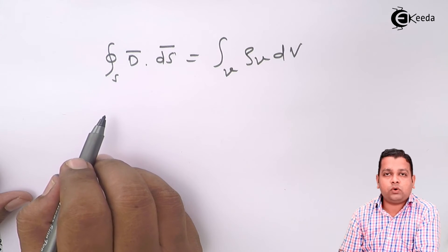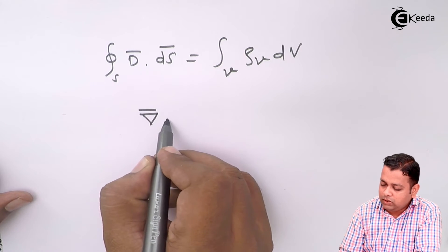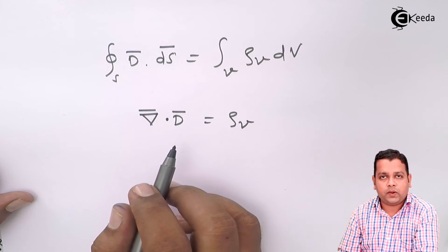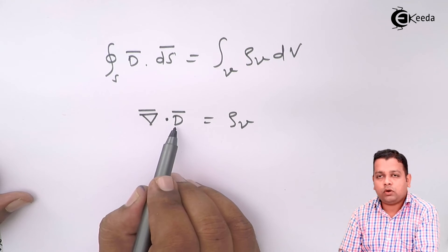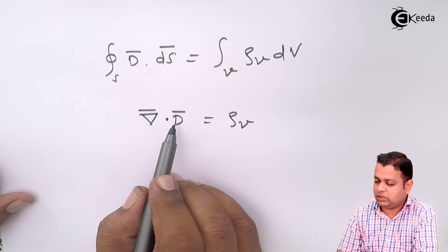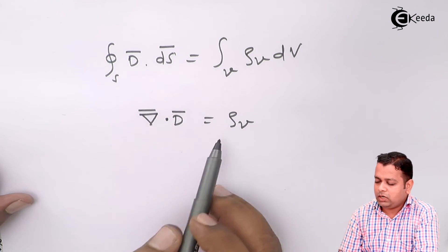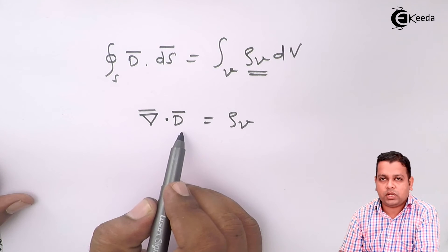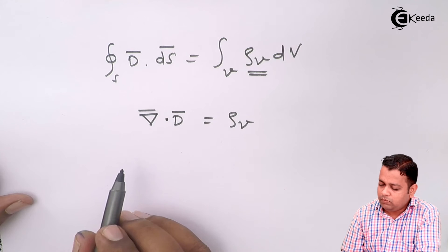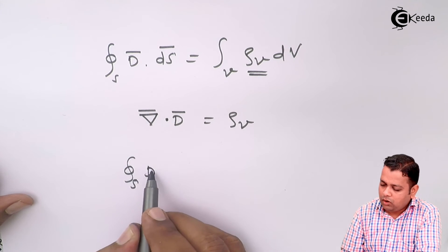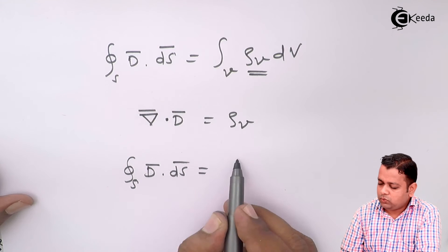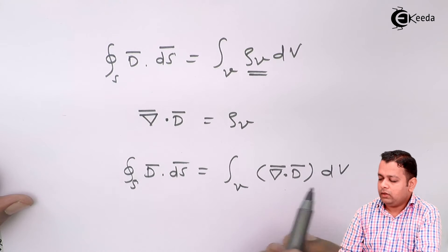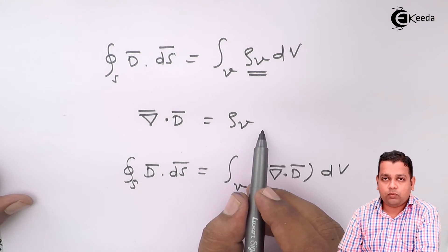In point form, also called differential form, the divergence of D represented by Del-bar dot D-bar was found to be equal to rho_v. This is the representation of divergence of D-bar, where D-bar is electric flux density. Using both relations, we substitute rho_v on the right-hand side of the integral form with the divergence of D from the point form. The equation becomes: closed surface integral of D-bar dot dS-bar equals volume integral of divergence of D-bar dV.